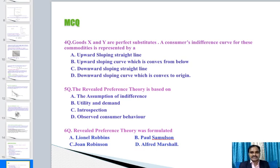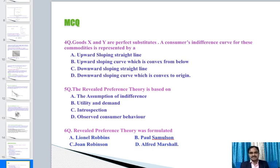Question 6 — Revealed preference theory was formulated by: Lionel Robbins, Paul Samuelson, Joan Robinson, or Alfred Marshall? The answer is Paul Samuelson, as already discussed in the lecture.